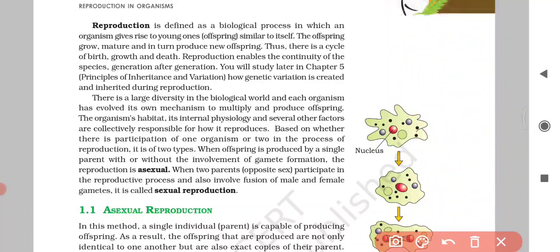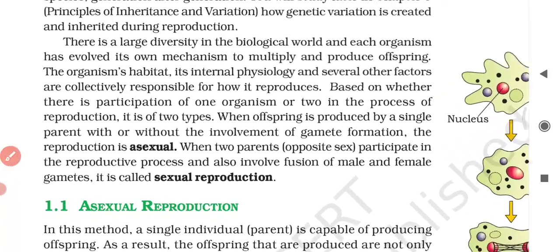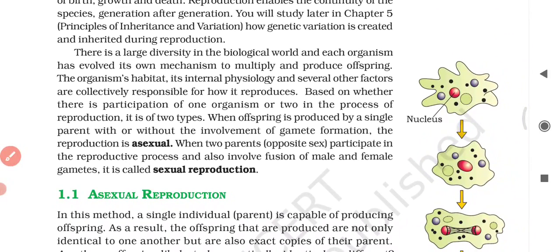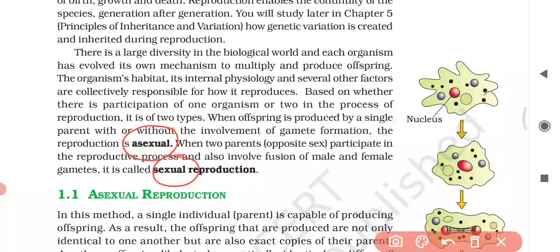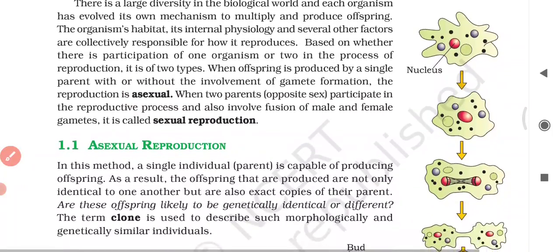Reproduction is divided as a biological process in which an organism is divided into two parts. And if there is participation of one organism or two in the process of reproduction, if only one parent with the involvement of gamete formation, the reproduction is called asexual. When two parents of opposite sex participate, it is called sexual reproduction. This is a very good example of asexual reproduction.